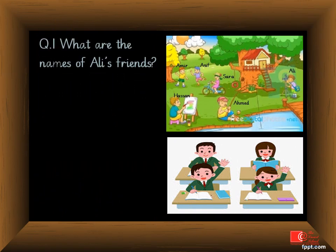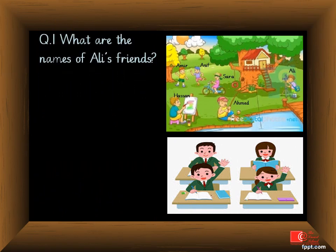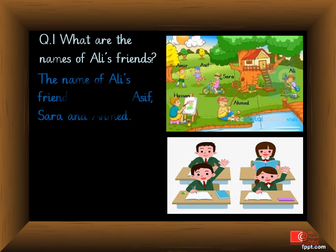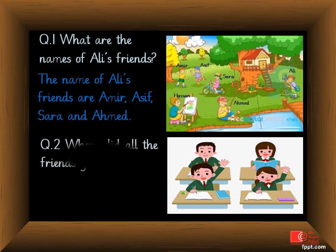Question 1: What are the names of Ali's friends? Answer: The names of Ali's friends are Aamir, Asif, Sara and Ahmed. Question 2: Where did all the friends go? Answer: They went to enjoy in the park.